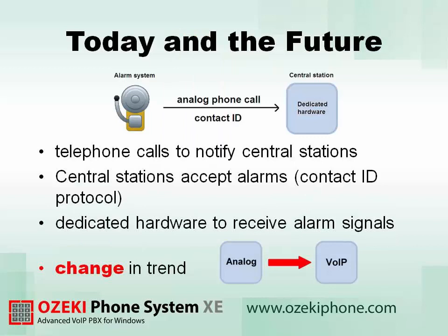Today's alarm systems use telephone calls to notify central stations. Central stations are equipped to accept alarms using the Contact ID Protocol. Most central stations use dedicated hardware to receive the alarm signals through analog phone lines.